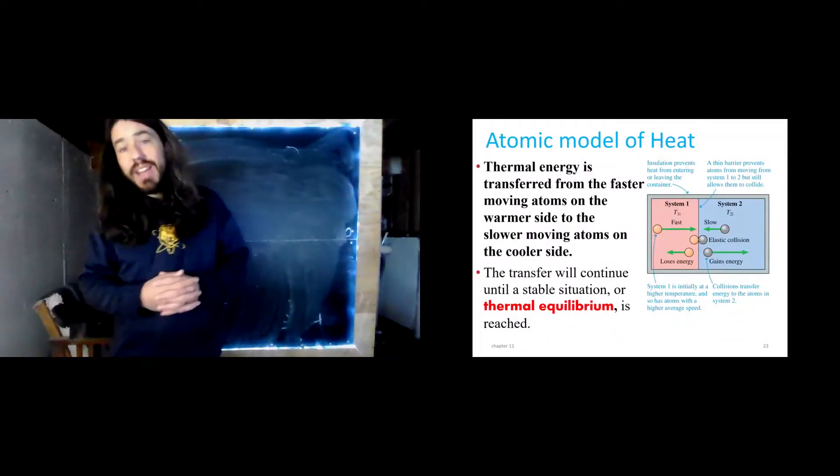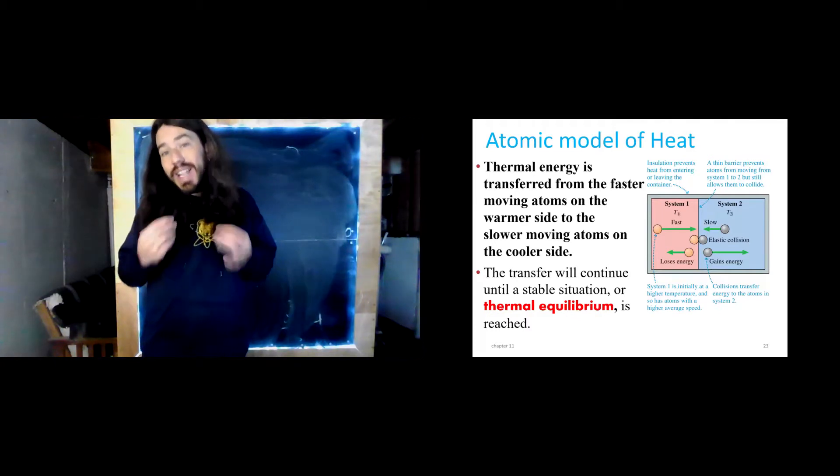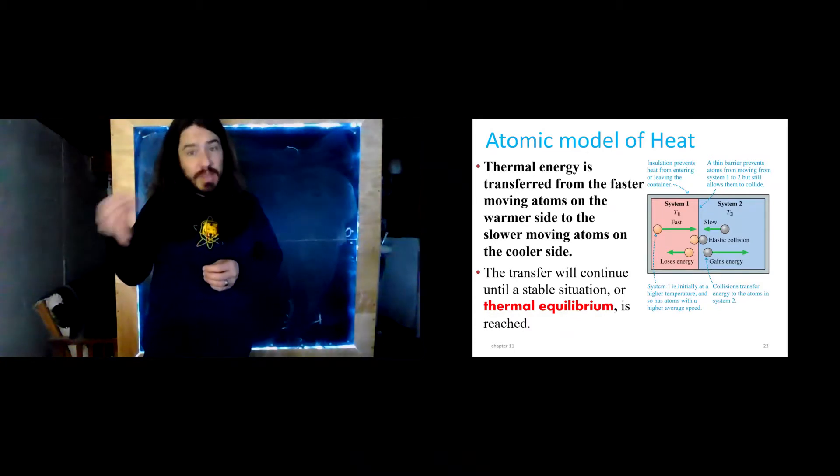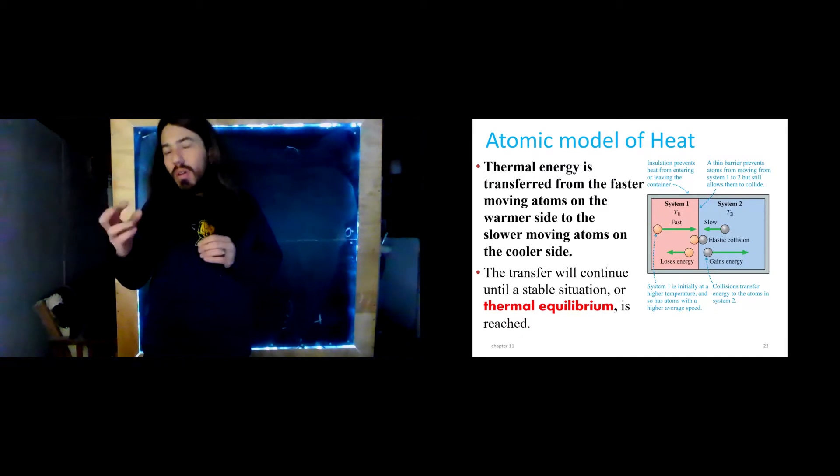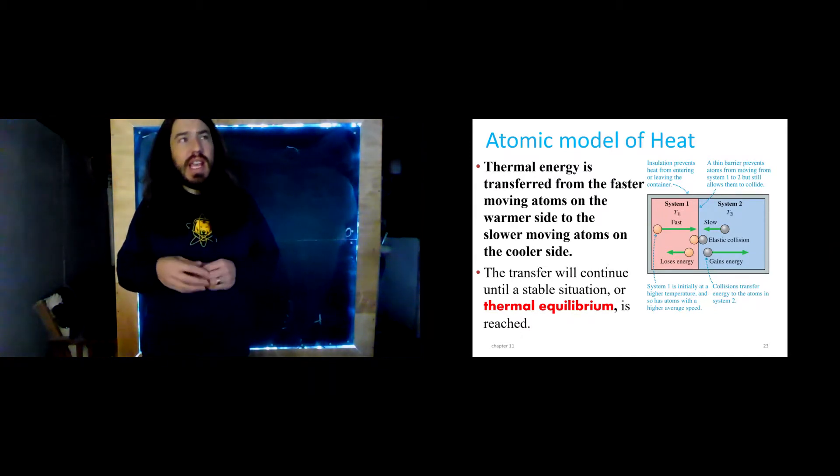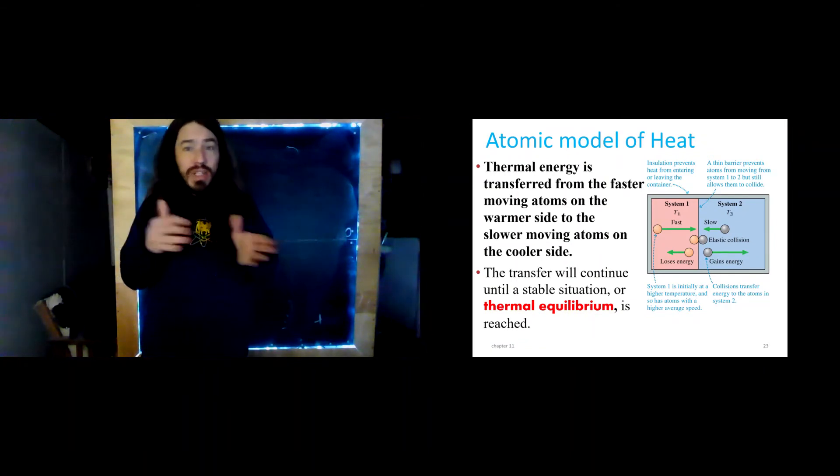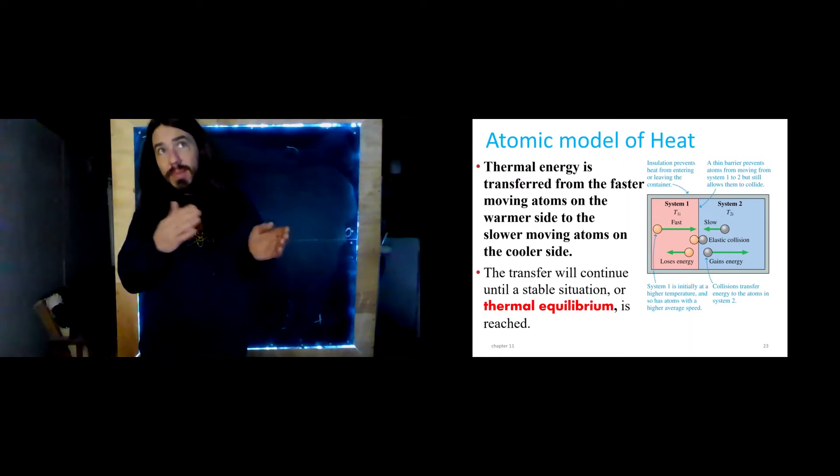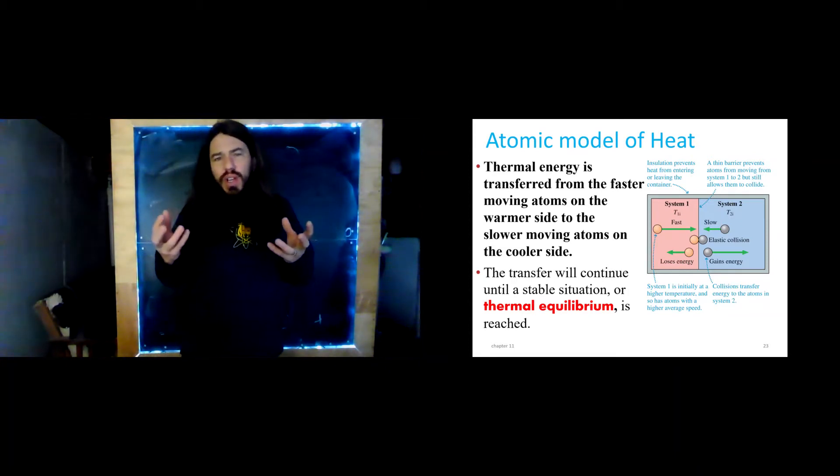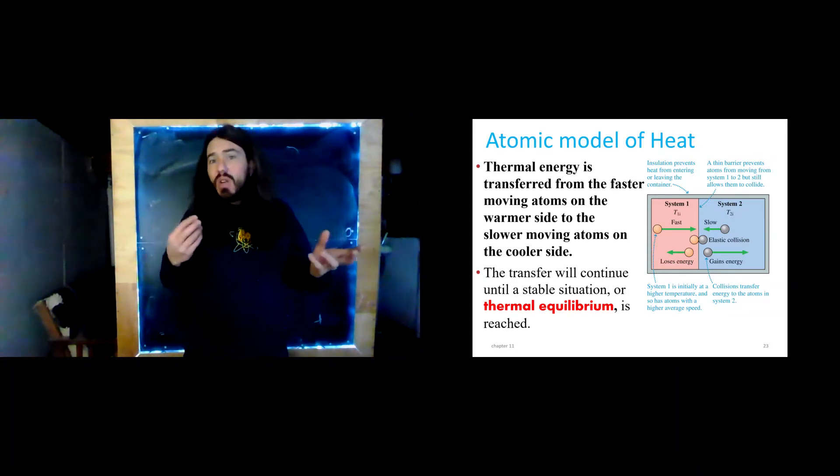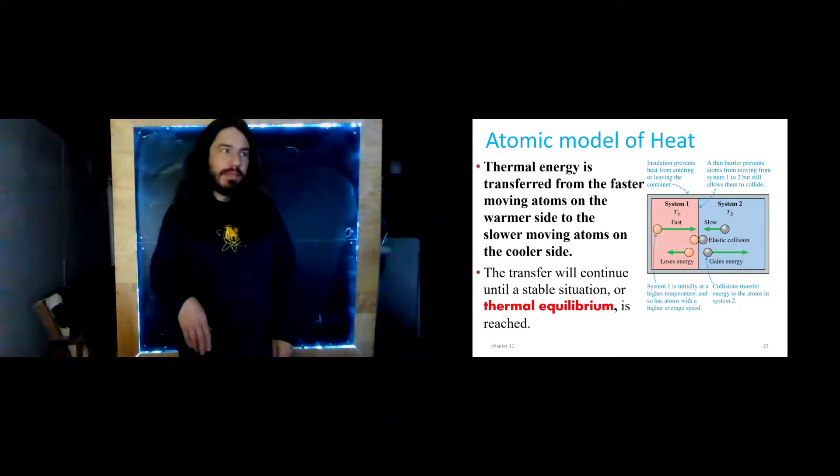We've learned that temperature is a measure of the average translational kinetic energy of the molecules or atoms that make up a substance. We've also learned an older definition of temperature: it's the thing that is equal when thermal energy, heat, stops flowing between two objects. Turn that around - heat stops flowing between two objects when they're at the same temperature. Let's look at how that happens and how these two very different sounding definitions jive with each other.